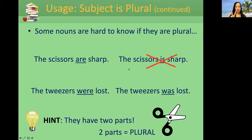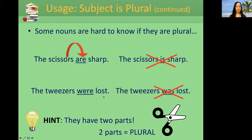We usually say 'scissors' because it has two pointy edges — two parts. Another example: 'the tweezers were lost.' Which is correct — 'the tweezers were lost' or 'the tweezers was lost'? The tweezers were lost. So tweezers are plural, and so are scissors. If they have two parts, they are plural. Starting to make sense?